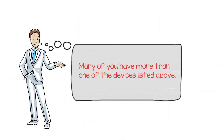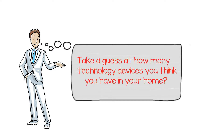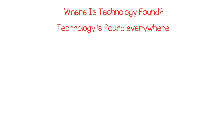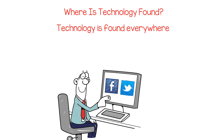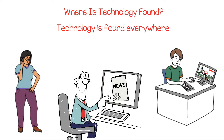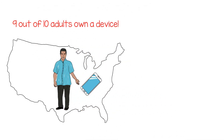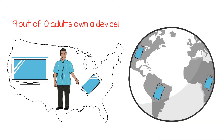Many of you have more than one of the devices listed above. Take a guess at how many technology devices you think you have in your home. Technology is found everywhere, and on any given day you are likely to see people working on a computer, emailing, checking social media accounts, reading online news, playing games, or talking on cell phones. Roughly 9 out of 10 adults in America own a device, and countries around the world also have high rates of ownership.